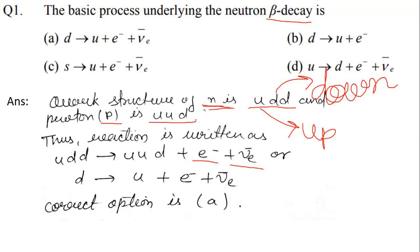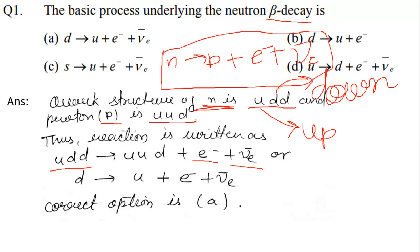Our neutron beta decay — this means the neutron will break apart. The basic beta decay process: neutron decays into proton plus — the extra particles formed are electron (which is showing the beta decay) and anti-neutrino. So this is our basic process of beta decay. Now the neutron structure is UDD, proton is UUD, plus electron and anti-neutrino. One UU will cancel, so what remains: D → U + electron + anti-neutrino. So D tends to U + electron + anti-neutrino. Option A is correct. This is the easiest method and you should solve this type of question using this method.